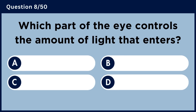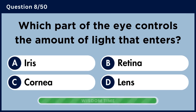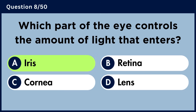Which part of the eye controls the amount of light that enters? Answer A: Iris.